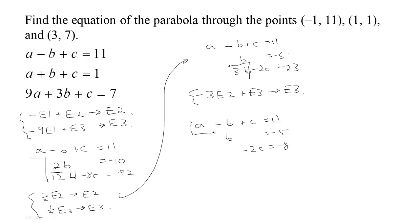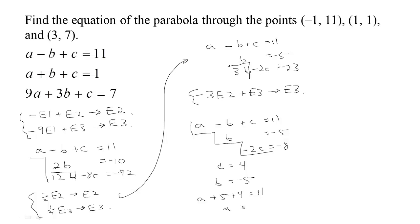Now we have the system in staircase form, and it's easy to find the solution. The last equation only has one variable: divide both sides by negative two and we find that c equals 4. Our second-to-last equation didn't have a c in it, so we can just read off that b equals negative 5. And finally, the top equation says a minus b — but negative negative five is positive five — plus c, and we know c is 4, equals 11. So a plus nine equals eleven, meaning a equals 2.